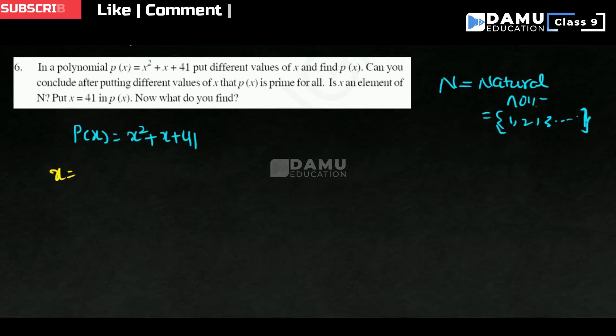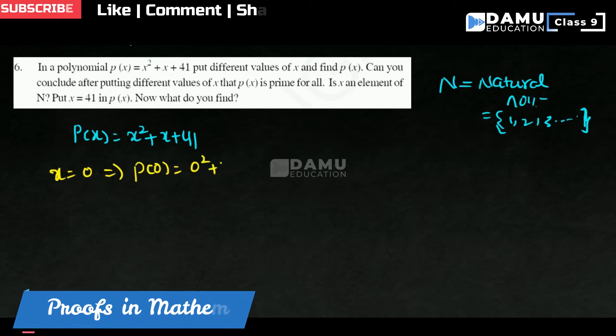Let us take if x equals 0. Then what is P(x)? P(0) will be equal to 0 square plus 0 plus 41. What we are getting? 41.